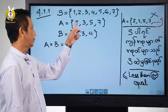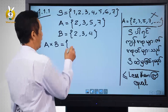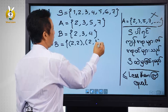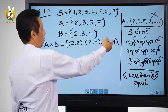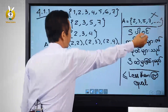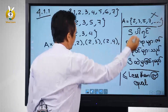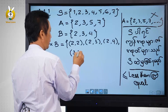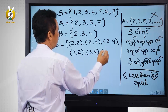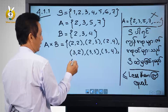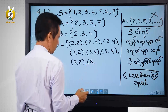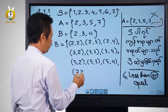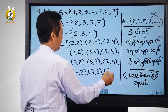The same thing is that the two of us are the same. We have two of us: (2,2), (2,3), (2,4). We have three of us: (3,2), (3,3), (3,4). Five: (5,2), (5,3), (5,4). Seven: (7,2), (7,3), (7,4).